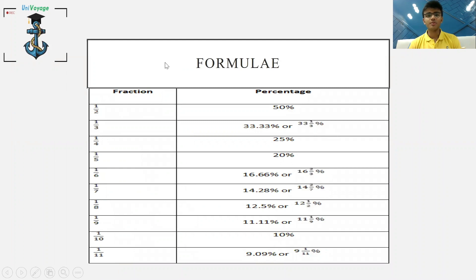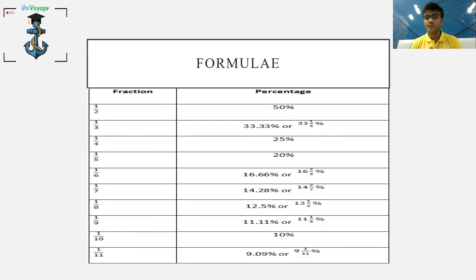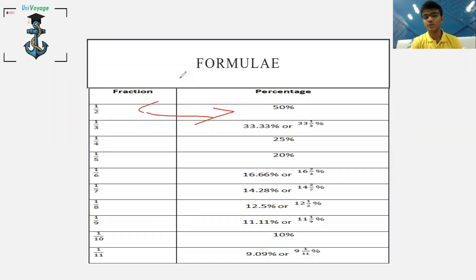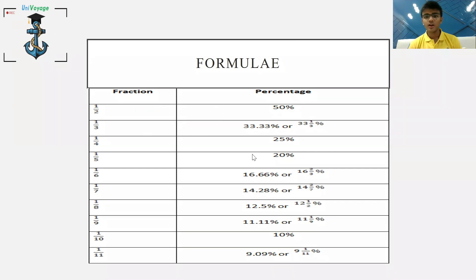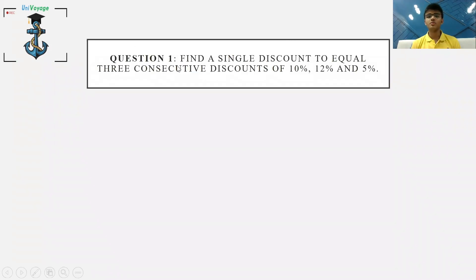This is the percentage conversion table I highlighted in the percentages video as well — do check that out. This is a very key table you must remember because it's important not just for arithmetic questions but also for data interpretation questions. You should know it both ways: if I ask what's 1/7, you should say 14.28%; if I ask what's 16.66%, you should say 1/6. You need to remember this in both directions.